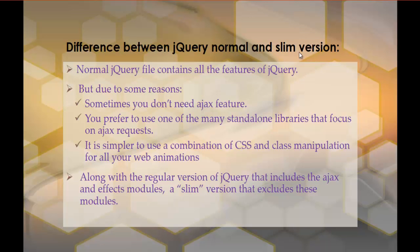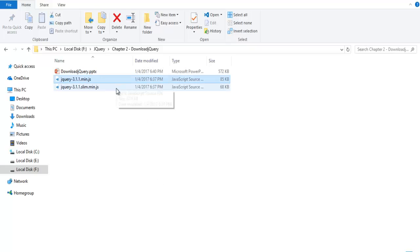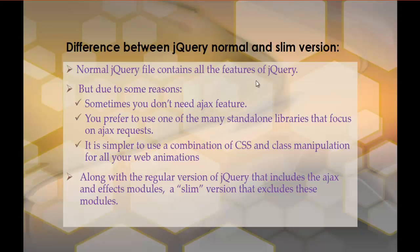Now we are going to understand the difference between jQuery normal and the slim version. The normal jQuery file contains all the features of jQuery. Sometimes we don't need to make use of the Ajax feature, and instead we might use some other libraries that concentrate only on Ajax requests. At that time we can go with the slim version. In the normal jQuery version we have the Ajax and FX modules, but in the slim version these Ajax and effect modules have been removed.